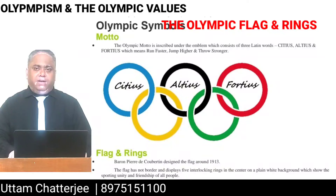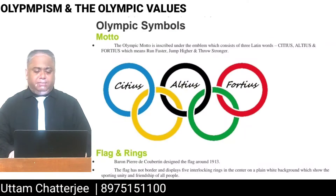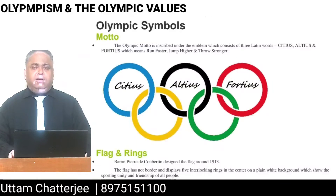The five rings of the Olympic flag consist of the blue ring interlocked with the yellow ring. The blue ring represents Europe and the yellow ring represents Asia. The black ring represents Africa. The green ring represents Australia, and the red ring represents South America and North America.